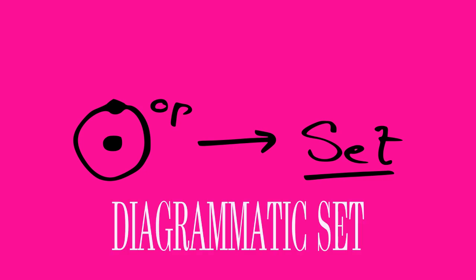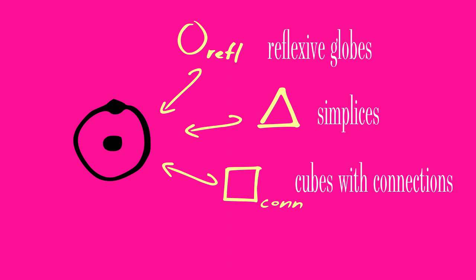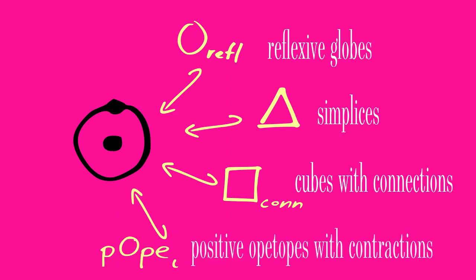The atom category contains many others as full subcategories: the reflexive globe category, the simplex category, the category of cubes with connections, and the category of positive opetopes with contractions.